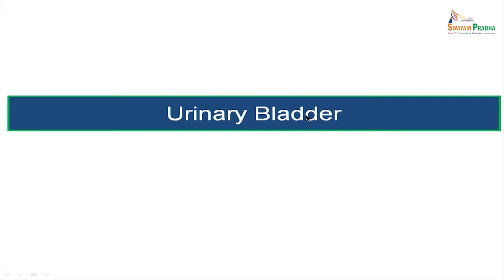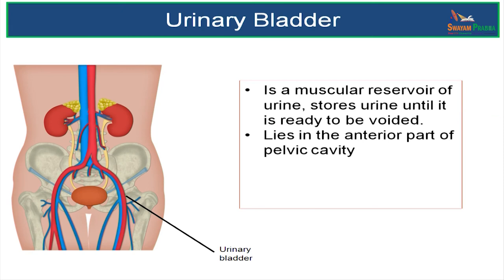Now we will go on to the microscopic anatomy of urinary bladder. To study the microscopic anatomy of urinary bladder, let us highlight some of the gross anatomical features of urinary bladder. As you all know, the urinary bladder is a muscular reservoir of urine. It is going to store the urine until it is ready to be voided.